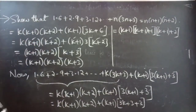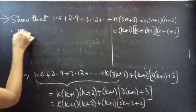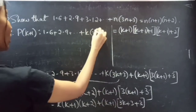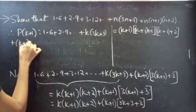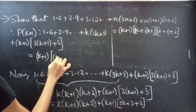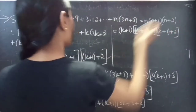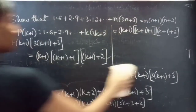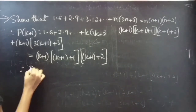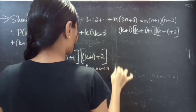From this, we can say that the statement is true for n equals to k plus 1. Therefore, P(k plus 1) — that is, 1 into 6 plus 2 into 9 plus so on plus k into 3k plus 3 plus k plus 1 into 3 times k plus 1 plus 3 equals n into n plus 1 into n plus 2 for n equals to k plus 1 — is true whenever P(k) is true.